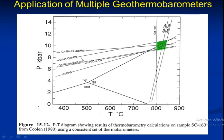Multiple geothermometers include garnet, garnet-orthopyroxene, garnet-cordierite, garnet-plagioclase, and hornblende-cordierite systems. All of these operate at temperature ranges over 800 degrees Celsius and pressure more than 6 kilobars to 10 kilobars. This is the pressure-temperature diagram showing the result of geothermobarometer calculation for sample SC160 from Koolant 1980 using a consistent set of thermometers.